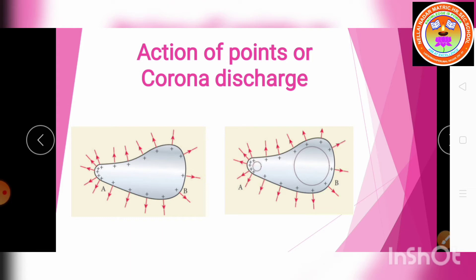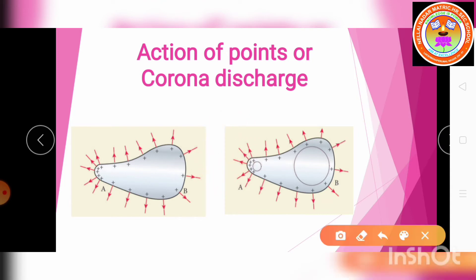The electric field near this sharp edge is very high. This ionizes the surrounding air, producing positive and negative charges. The positive charges on the conductor attract all the negative ions from the ionized air.